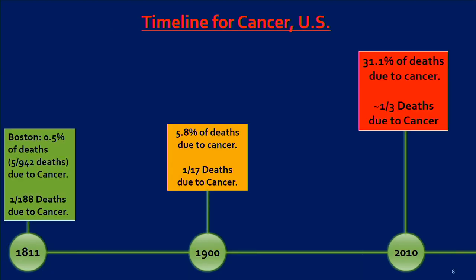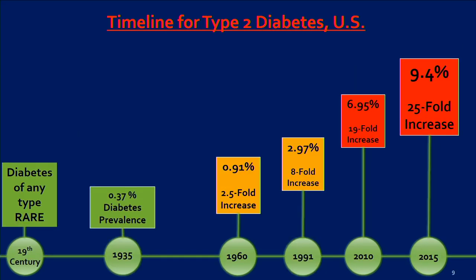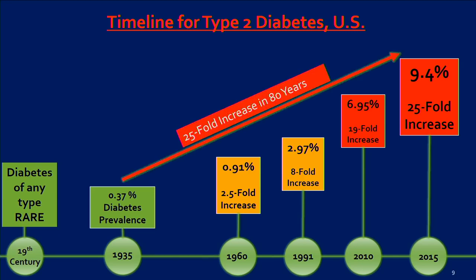Cancer: in 1811 Boston, 0.5% of deaths — five of 942. That's one in 188 deaths due to cancer. By 1900, it's rising: 5.8% of deaths, that's one in 17. By 2010, 31.1% of deaths — nearly one in three again. Type 2 diabetes was rare in the 19th century and for all of history prior. By 1935, it's rising at 0.37%, continuing to rise. Up to 2015, we're at 9.4%. So in a period of 80 years, there's a 25-fold increase in diabetes.